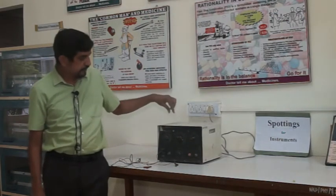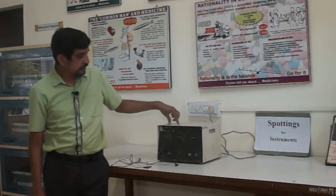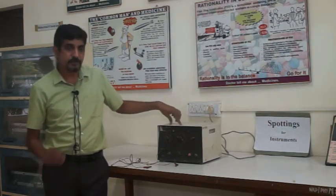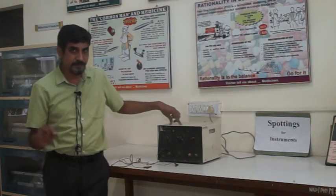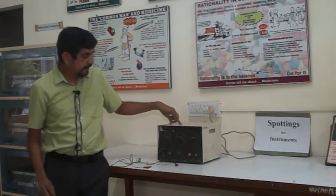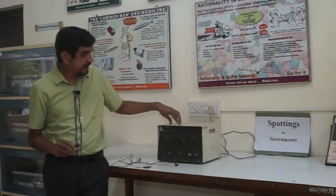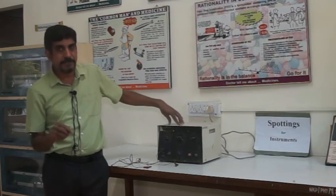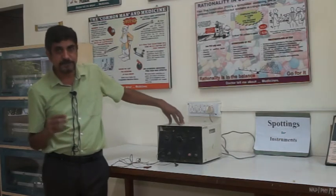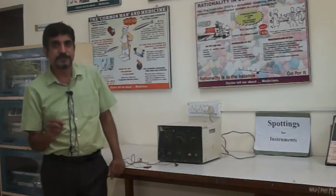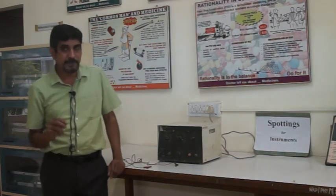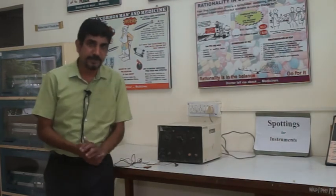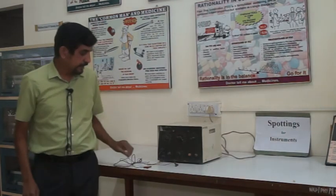The question asked on this spot is: identify the instrument — you have to write convulsivometer. The second question is: name a few drugs which are evaluated by using this instrument. You have to write the drugs useful in grand mal epilepsy, like phenobarbitone or phenytoin.